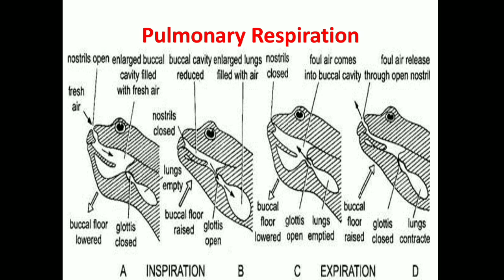Both buccopharyngeal and pulmonary respiration require active participation of the respiratory muscles, which enable the frog to move its buccal cavity floor upward and downward. That is all for today's lecture on the respiratory system of frog. If you have any doubts, please put them in the comment section, subscribe to the channel Biology Paradigm, and stay tuned for the next video on the heart and circulatory system of frog.